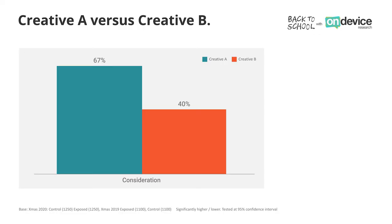So this data may be split, for example, to show that creative A is working better than creative B. If that is then applied to the next campaign, an improvement in the effectiveness of the campaigns can happen. So have you seen any live examples of this actually being put into practice?